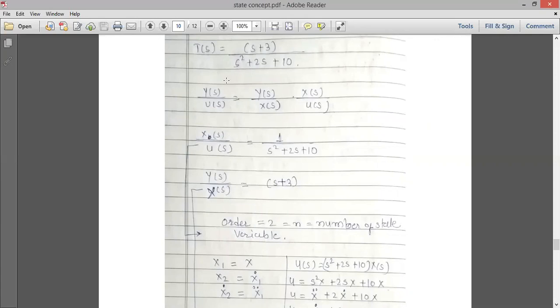What is the transfer function y(s)/u(s)? So here I split the y(s) and u(s) in terms of the state equation or the state variable. So it will be y(s)/x(s) and x(s)/u(s). So x(s)/u(s) is 1/(s^2+2s+10) and y(s)/x(s) is equal to s+3.